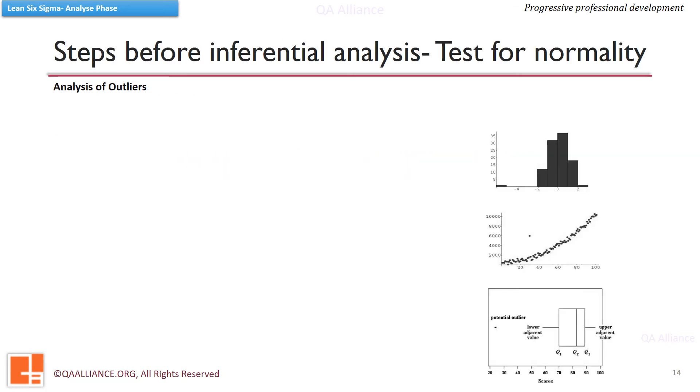First, we do outlier analysis. Outlier is any data point that is numerically distant from the rest of the data. Outliers tend to draw the mean values towards them and make data look skewed. The outlier may be present due to some fault in the data itself or due to some special cause. We will learn more about special causes later in the training. If data needs correction, we do that, else we include the outlier in the data and perform the normality test.